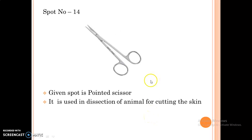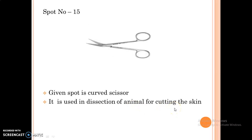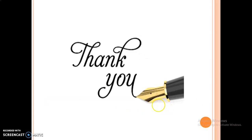The next spot is pointed scissor. It is used in the dissection of the animal for cutting the skin. The next spot is curved scissor. It is also used in the dissection of the animal for cutting the skin. That is all about today's video. In the upcoming video, we will study about CD based questions. Thank you for watching the video.